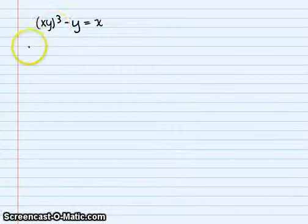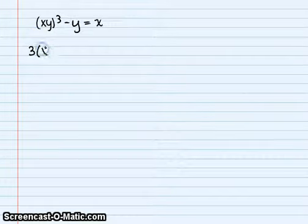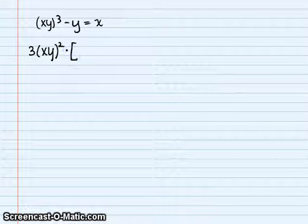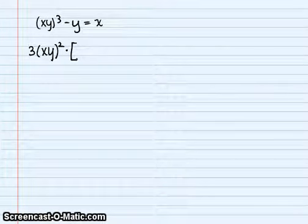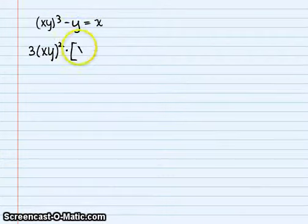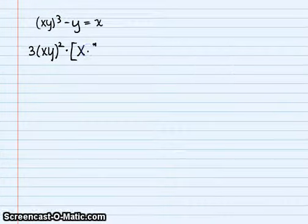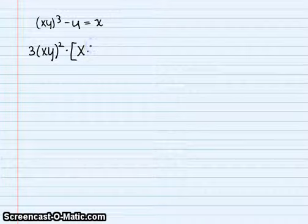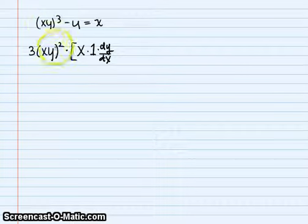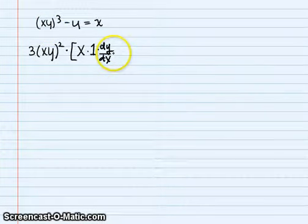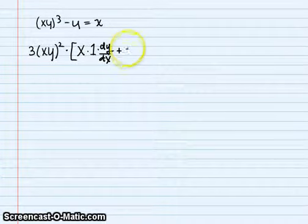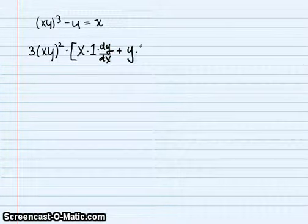This first term is a chain rule, so we're going to get 3xy² times the derivative of the inside. The derivative of the inside is a product, so we're going to use the product rule here. First times the derivative of the second — and we have to remember that since y is a function of x, we have to multiply by dy/dx using the chain rule — plus the second times the derivative of the first.